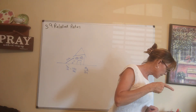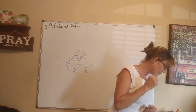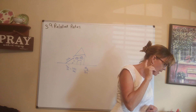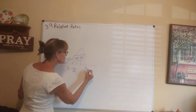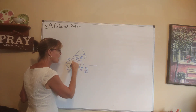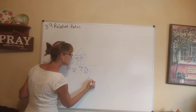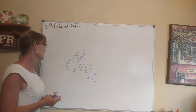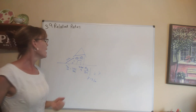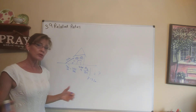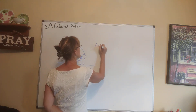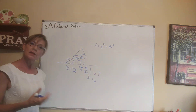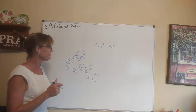The question is: what is dy/dt when y equals 8? We need a formula that will relate all our values. We have a right triangle, and the Pythagorean theorem will work nicely: x squared plus y squared equals 20 squared. We can take the derivative of this with respect to time.